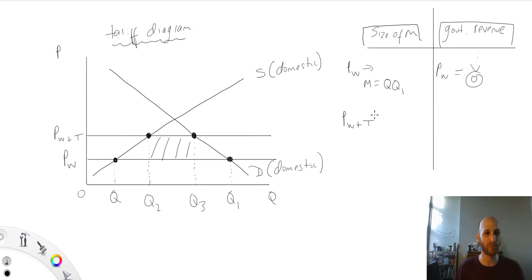So therefore, at Pw plus T, the size of the imports would be smaller, because the price is higher. So the size of imports equals Q2 to Q3. That's the level of imports that comes in.